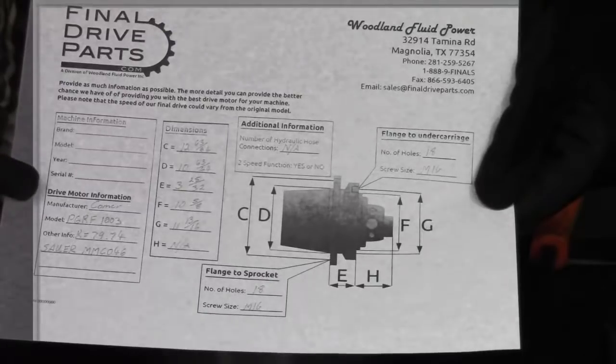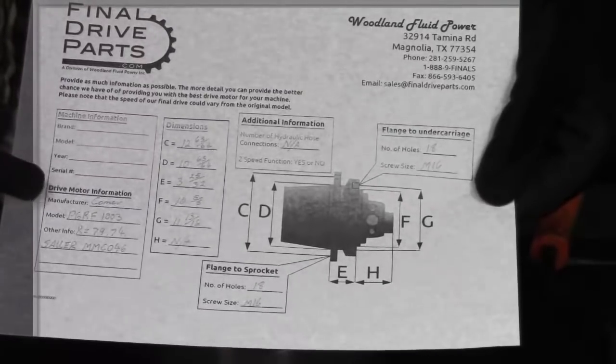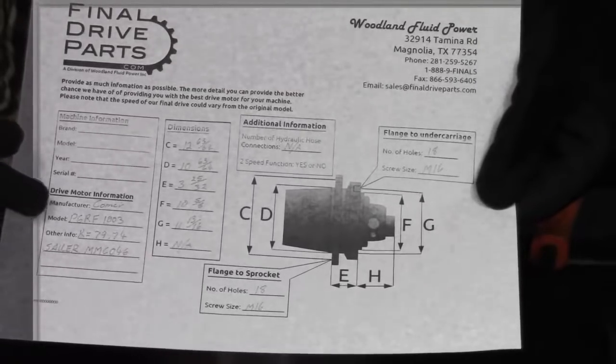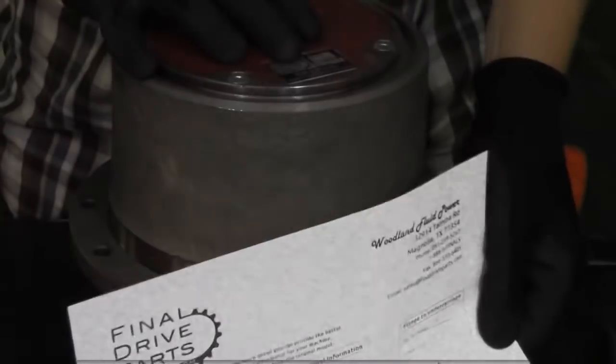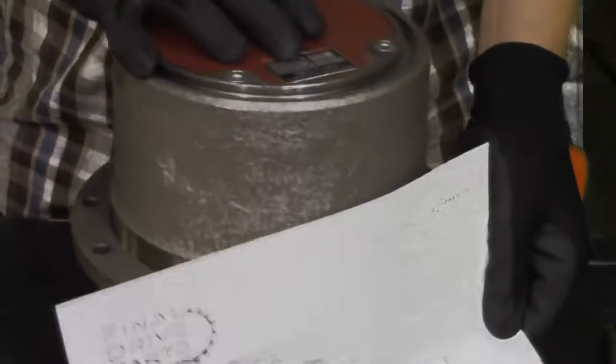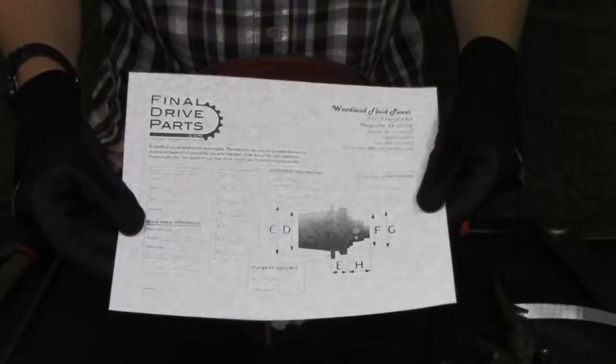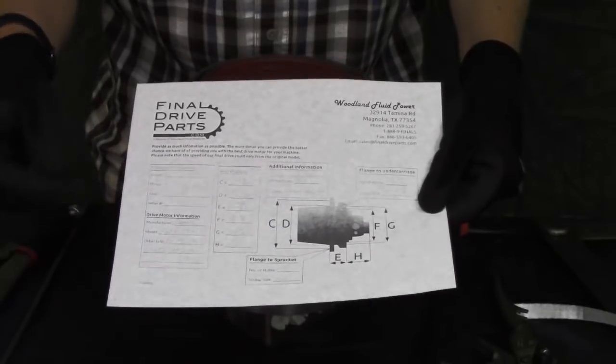Below that is the drive motor information. If possible, give us the information off the data tag that's on your final drive motor. Usually that tag will be on the cover of the drive here or on the other end, the back cover plate. And this information will again help us make sure we get the right fitment for you.